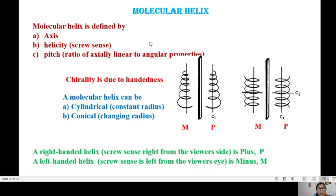Let us look more closely into a molecular helix. A molecular helix can be of two types: cylindrical arrangement or conical arrangement. Helix is defined by the axis, by the crucions that is the helicity, and by the pitch that is the ratio of axially linear to angular properties. The chirality is due to handedness. Molecular helix can be cylindrical as well as conical.